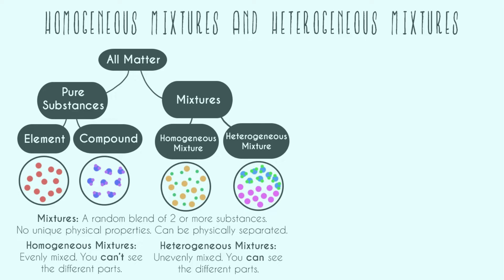Even though this video is going to focus on the right-hand side, which is mixtures, let's do a quick review. All matter is basically everything you're going to see in your life except for energy, which is things like light and heat. Inside matter we have two groups: pure substances, which are either elements like on the periodic table, or compounds — which is mostly molecules — so pure substances mean you have one thing.